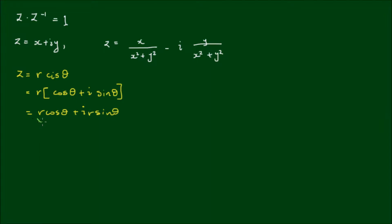And of course we note that r cos θ is equal to x and r sin θ is equal to y. And this z should have a power of negative 1. So let's substitute these expressions for x and y into the inverse of z.